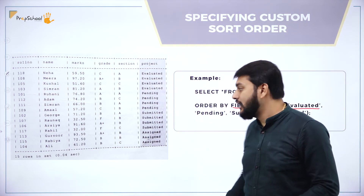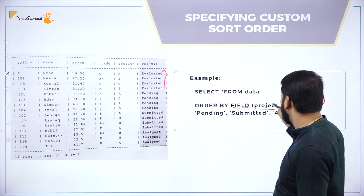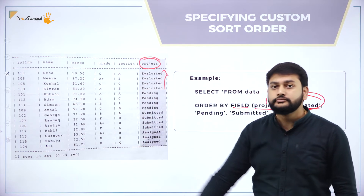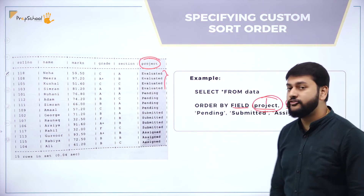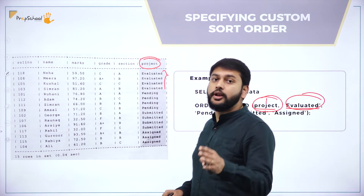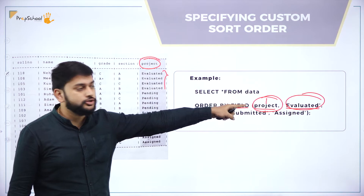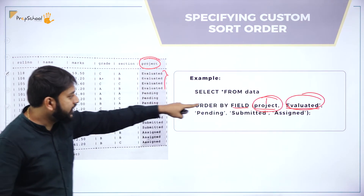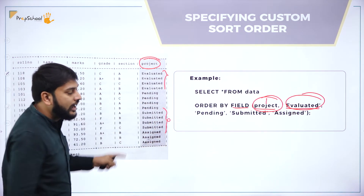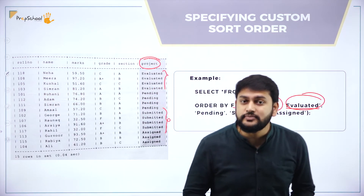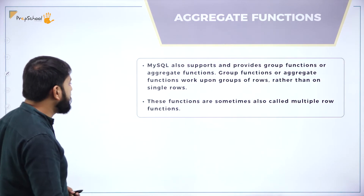Let's check how this query works. I have evaluated first in the project column, then pending, then submitted, then assigned. You specify the column name in FIELD(), then list the values in the order you want them. This is how you can customize your sorting. That covers the ORDER BY clause.